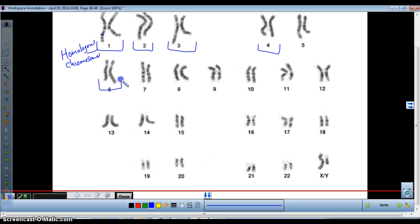If you have two copies of each chromosome, you're good. You get one copy from your mom and one copy from your dad, one copy from your mom, one copy from your dad, one copy from your mom, one copy from your dad, and so forth.